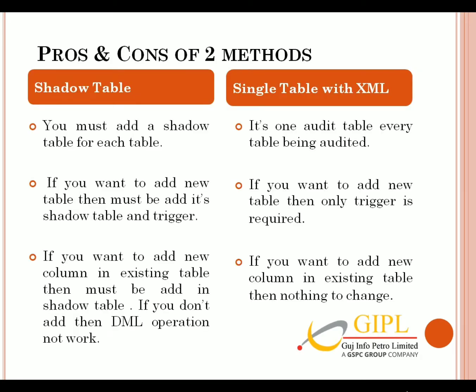Let's have a quick look at the pros and cons of both methods. First: in the silo table method, we have to create a clone table for every single table, which is not the case with the single table XML method — we can manage audit trail of all tables using just one table. Second: while adding a new table, we have to add clone tables and their triggers in the silo table method, whereas we only need to add a trigger in the second scenario. Third: in the silo table scenario, we need to add or remove columns in the clone table whenever we add or remove columns in the main table, which is not the case with the single table XML audit trail method.